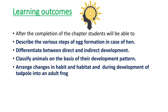Good morning students. In the previous lecture we discussed the male and female reproductive system, so today we are going to deal further with the same chapter — Reproduction in Animals. Today's learning outcomes: students will be able to describe various types of egg formation in case of hen, differentiate between direct and indirect development, classify animals on the basis of their development patterns, and arrange the changes in habit and habitat during development of tadpole into an adult frog.